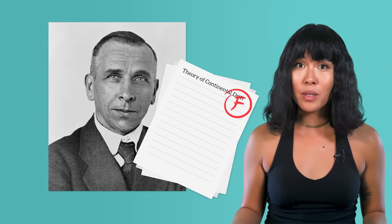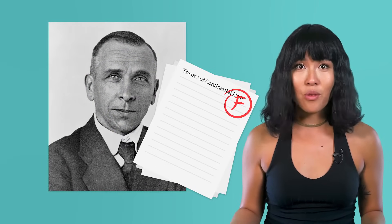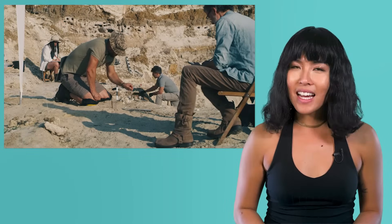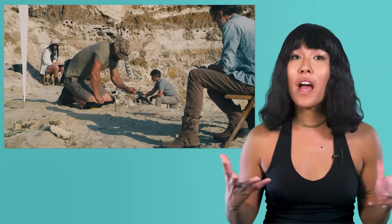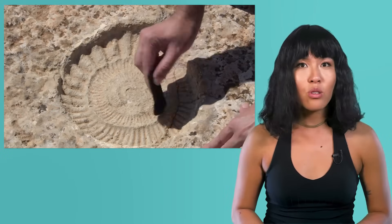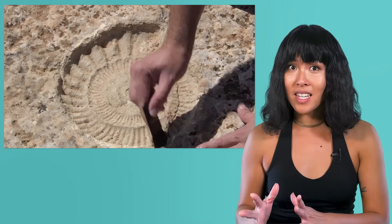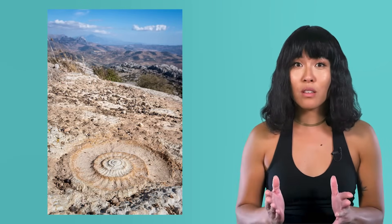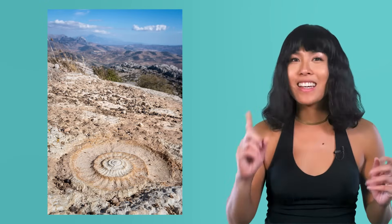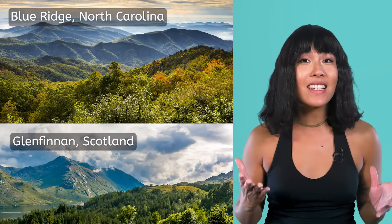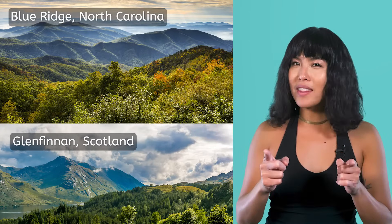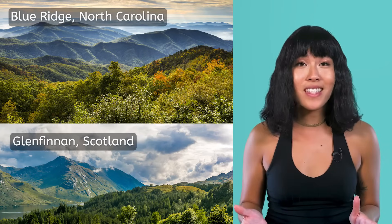Unfortunately for Alfred, nobody believed his theory of continental drift. After all, it's pretty hard to imagine entire continents just drifting across the ocean. But decades after Wegener's lifetime, more and more evidence began emerging that supported his theory. Fossils of animals only thought to have lived on one continent were found on the other side of the ocean too. Then scientists realized that the rocks the fossils were found in also matched. There are nearly identical mountain ranges made of the same kind and age of rocks in Europe and North America. How do you think that happened? Pause the video here and write down your thoughts in your guided notes.